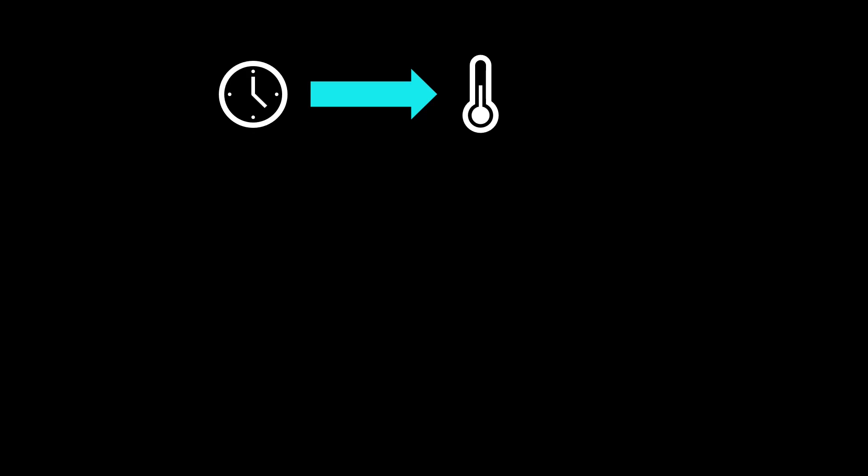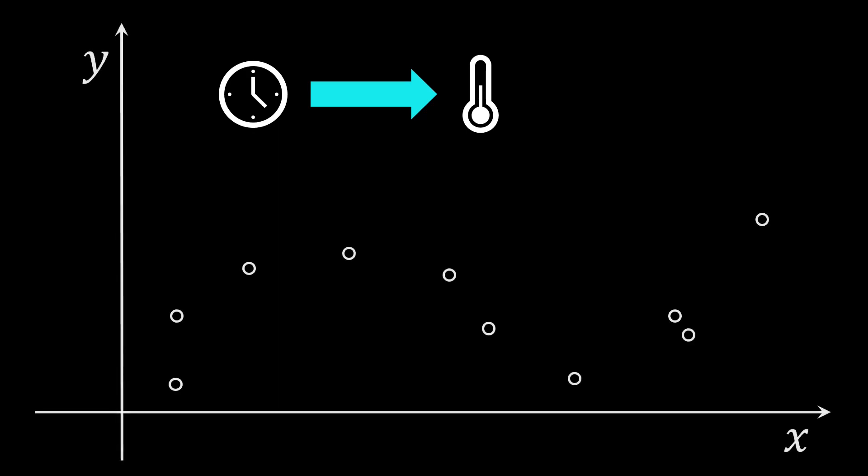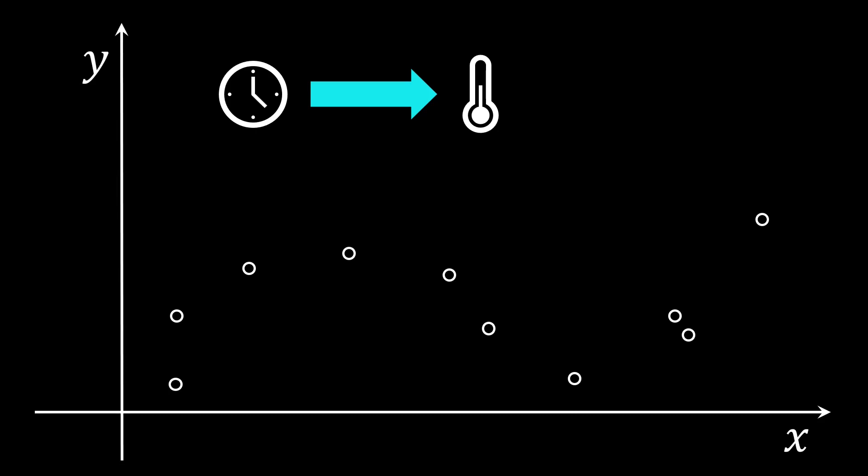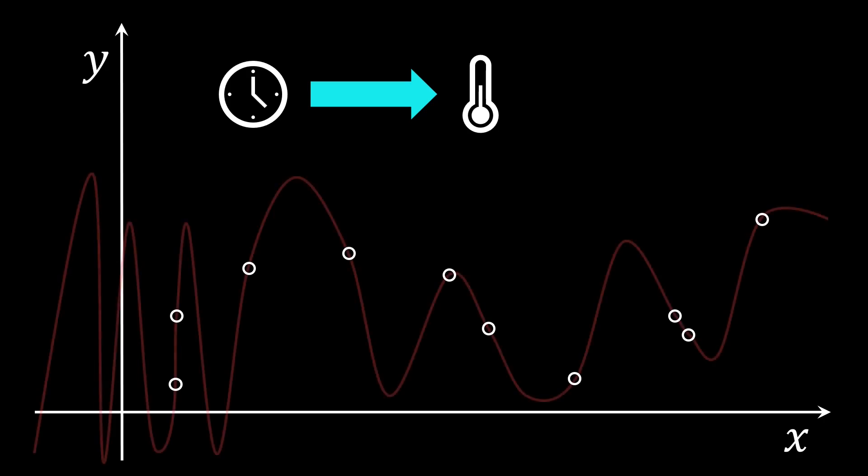We therefore gather some data that maps the time x to some temperature y. We want to be sure that our function approximator can fit the underlying function, and therefore choose a function approximator that is powerful enough to interpolate our data.